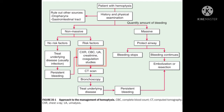Investigations for non-massive hemoptysis with risk factors or persistent bleeding include chest X-ray, complete blood count, urinalysis, creatinine level, and coagulation studies. If these tests are normal and non-significant, we proceed to CT scan. Bronchoscopy is only performed after CT scan comes back normal and the cause of hemoptysis remains unclear.